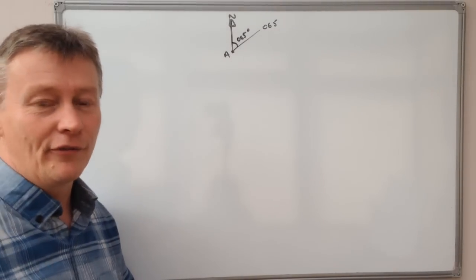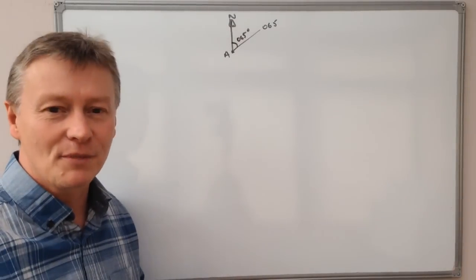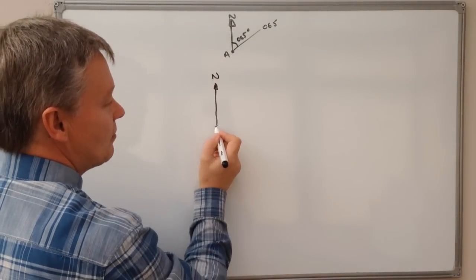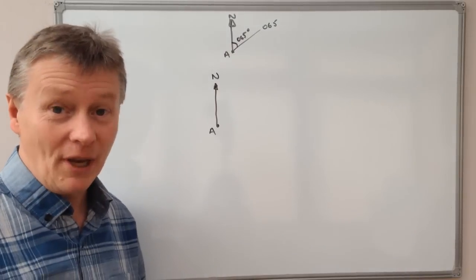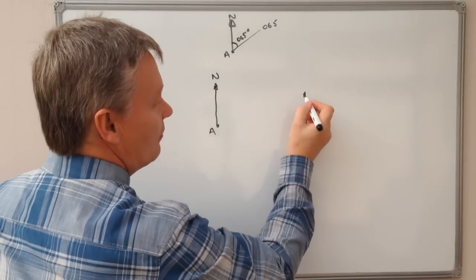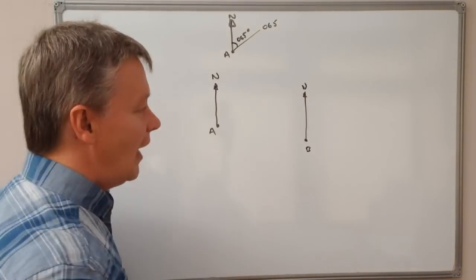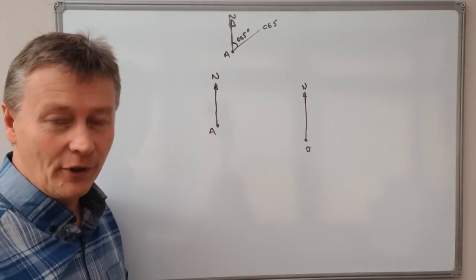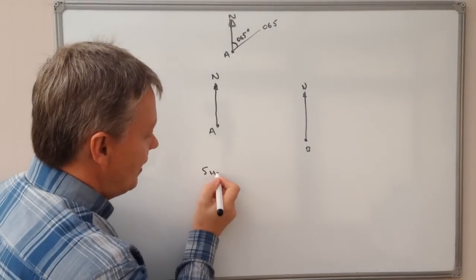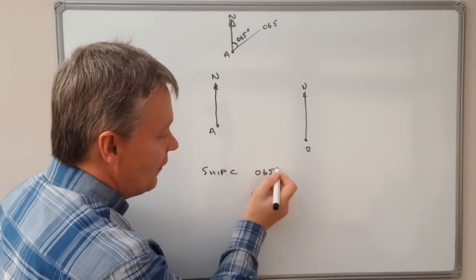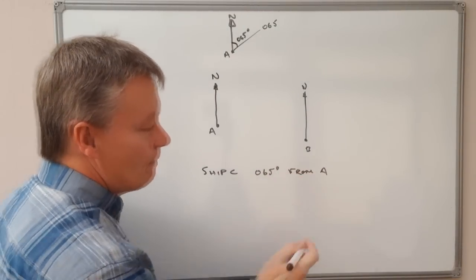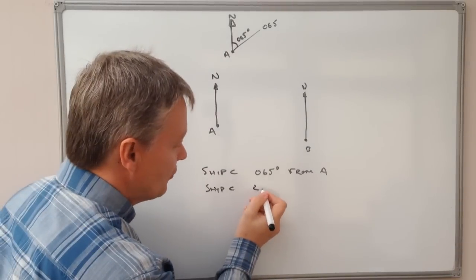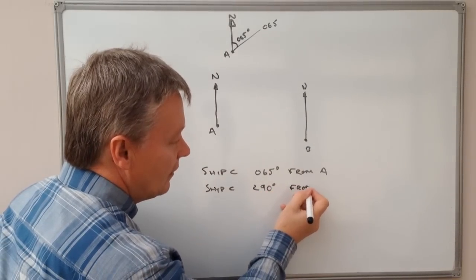Let me give you an example question. In this particular case, we've got two ships: ship A and ship B. The question is to locate and draw the position of ship C, which is somewhere in the middle. You're given that ship C is on a bearing of 065 degrees from ship A.